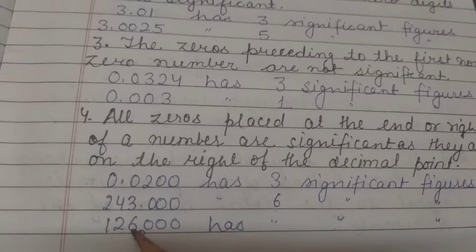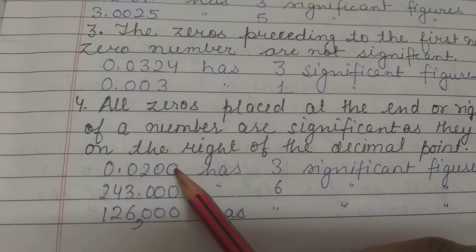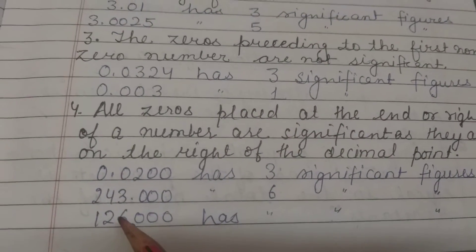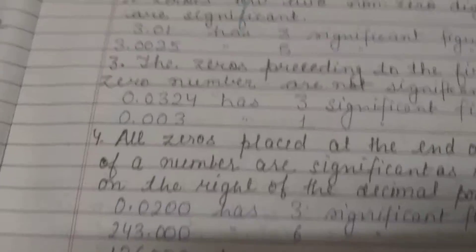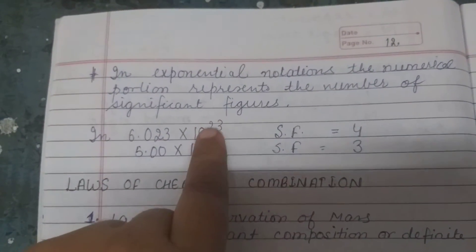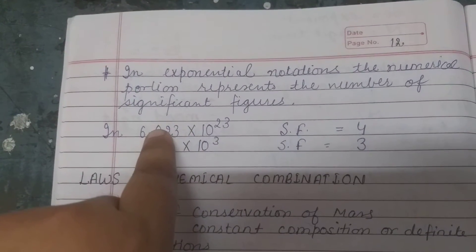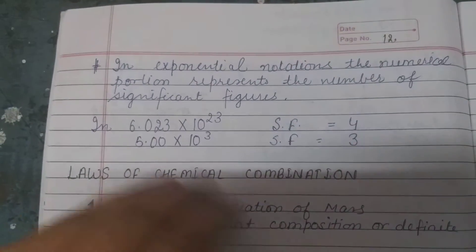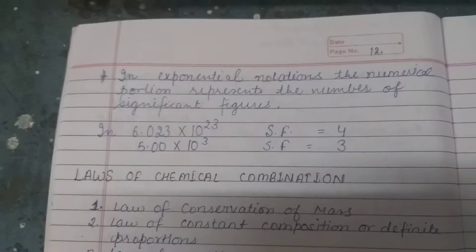Exponential terms do not count toward significant figures. You calculate the number of significant figures from the numerical values only. For example, one has four significant figures and another has three significant figures. So this exponential topic is finished.